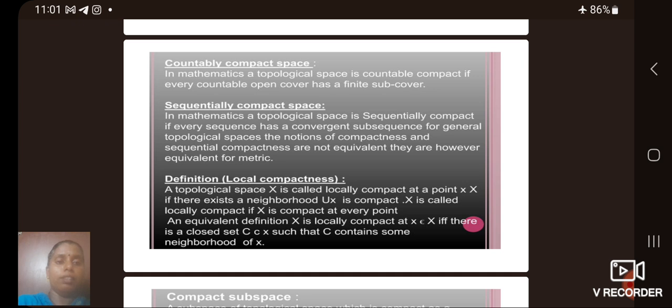Next, we see the definition of local compactness. A topological space X is called locally compact at a point x if there exists a neighborhood Ux that is compact. X is called locally compact if X is compact at every point.